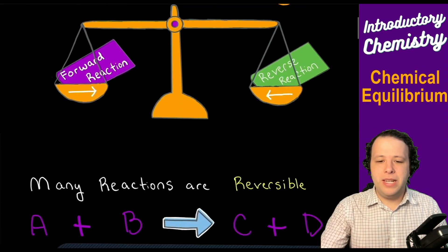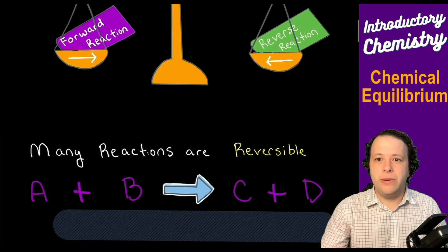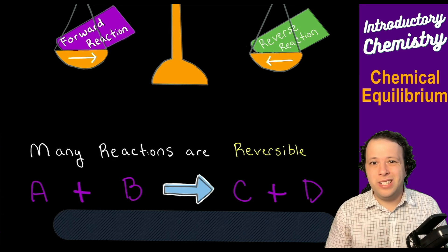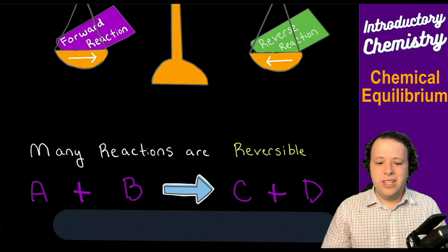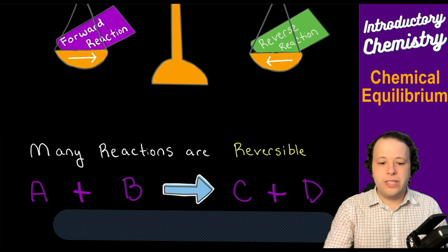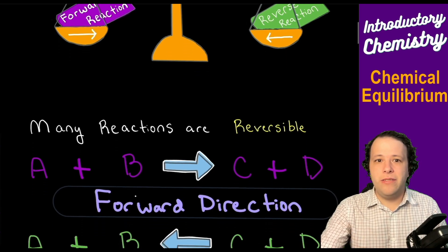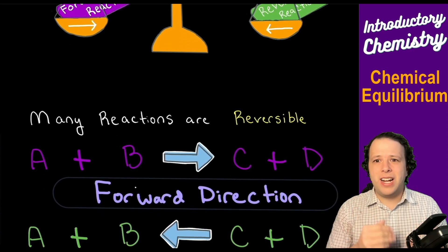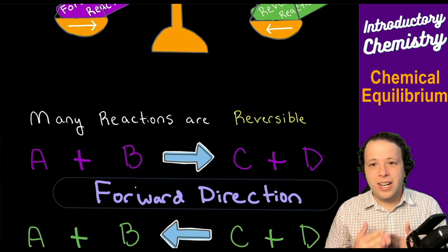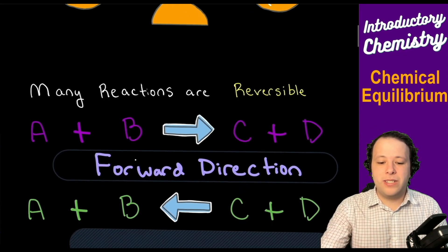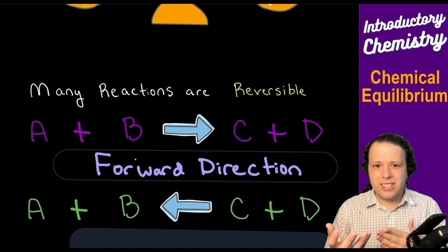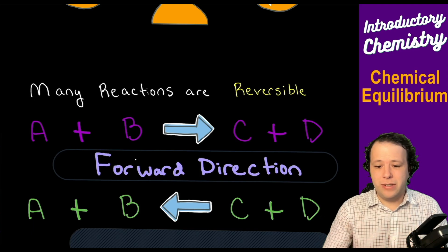What exactly does that mean? Well, many different reactions — one thing that we will find out throughout chemistry — is that they are reversible, meaning that they don't occur only in one direction. In previous videos and probably in your chemistry class, you saw that most reactions occur in the forward direction, meaning that you have reactants on the left-hand side, products on the right. However, a lot of these reactions can also go in the reverse, meaning that if reactants are colliding together to make products, products could also be colliding with each other as particles to make reactants.